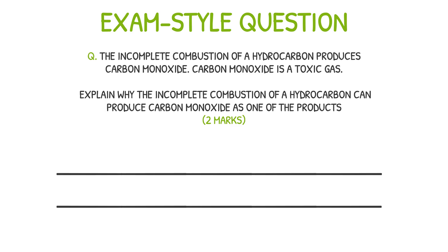To answer this question, there are two things you must know confidently. The first is the products of a complete combustion reaction — those being carbon dioxide and water vapour. The second is the chemical formulas of both, where carbon monoxide has the formula CO and carbon dioxide has the formula CO2. Complete combustion takes place when there is a plentiful supply of oxygen, meaning there are more than enough oxygen atoms to oxidise all the carbon atoms and form carbon dioxide, a compound containing two atoms of oxygen. In contrast, incomplete combustion takes place when there is an insufficient supply of oxygen, so we form carbon monoxide — a compound with just one oxygen atom.